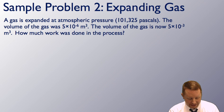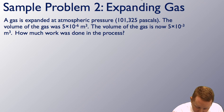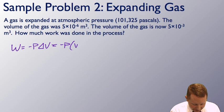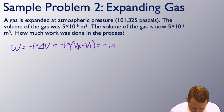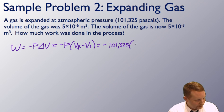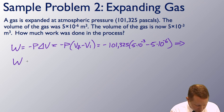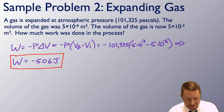Expanding gas problem: a gas expands at atmospheric pressure, 101,325 pascals. The volume was 5 times 10 to the minus 6 cubic meters and is now 5 times 10 to the minus 3 cubic meters. How much work was done? Work equals minus P delta V, or minus P times final volume minus initial volume: negative 101,325 pascals times (5×10⁻³ minus 5×10⁻⁶ cubic meters), which gives negative 506 joules. It's negative because the gas did the work.